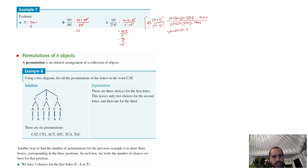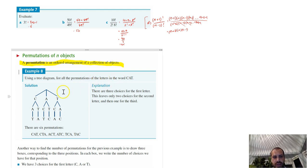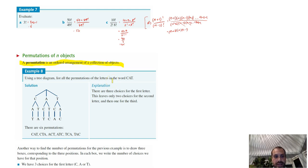Now we need to talk about permutations. A permutation is an ordered arrangement of a collection of objects. So using a tree diagram, list all the permutations of the letters in the word CAT. There are six permutations: CAT, CTA, ACT, ATC, TCA, and TAC.